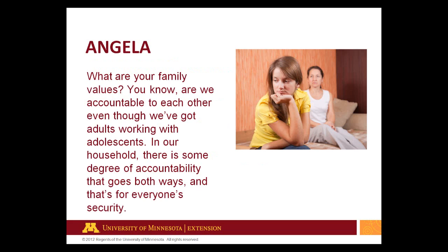This quote is from the mother of two teenage boys — one in middle school, one in high school. She's married, living in a rural area, and describes herself as white. She shares her perspective on what it means to be part of a family system: "What are your family values? Are we accountable to each other, even though we've got adults working with adolescents? In our household, there's some degree of accountability that goes both ways, and that's for everyone's security."